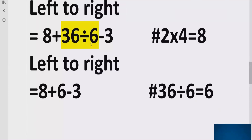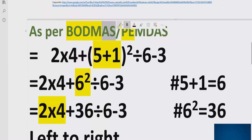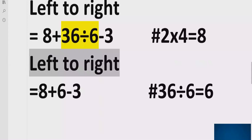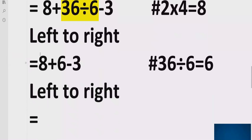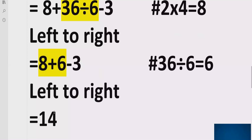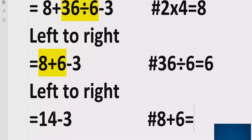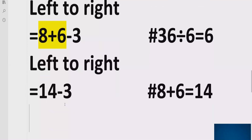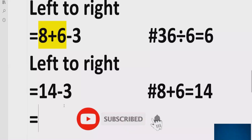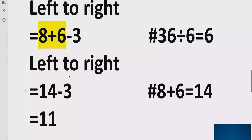We have completed division and multiplication. Now we handle addition and subtraction, going left to right. First we have addition: 8 plus 6 equals 14, and we write minus 3 as it is. Then we subtract: 14 minus 3 equals 11. So the answer of the given expression is 11.